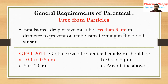Based on this, in GPAT 2014 there was one question: 'Globule size of parenteral emulsion should be?' The correct answer is less than 3 micrometers. The options were: 0.1 to 0.5 micrometers, 0.5 to 5 micrometers, 5 to 10 micrometers, and any of the above. The correct option is A — 0.1 to 0.5 micrometers for globule size of any parenteral emulsion.